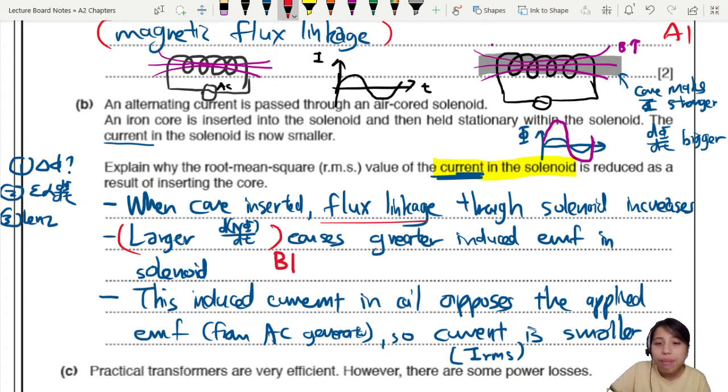So, from there, Faraday's law. Greater induced EMF. So, this is M1. So, if you've got greater induced EMF means what? This induced EMF is opposing the AC. Lenz's law, oppose the change. So, oppose the applied EMF, so current is smaller. So, this induced current, oppose the applied EMF. That's part three. A mark. You must get the M mark in order to get the A.